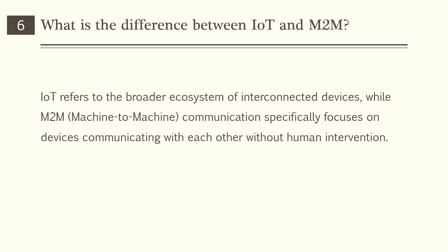What is the difference between IoT and M2M? IoT refers to the broader ecosystem of interconnected devices, whereas M2M, also known as machine to machine, specifically focuses on devices communicating with each other without human intervention.